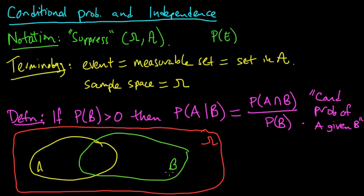And say this is B. So that's B. So we want to know, what's the conditional probability? Well, it's the probability of the intersection, which is this part here, right? This is the intersection. Divided by the probability of B.